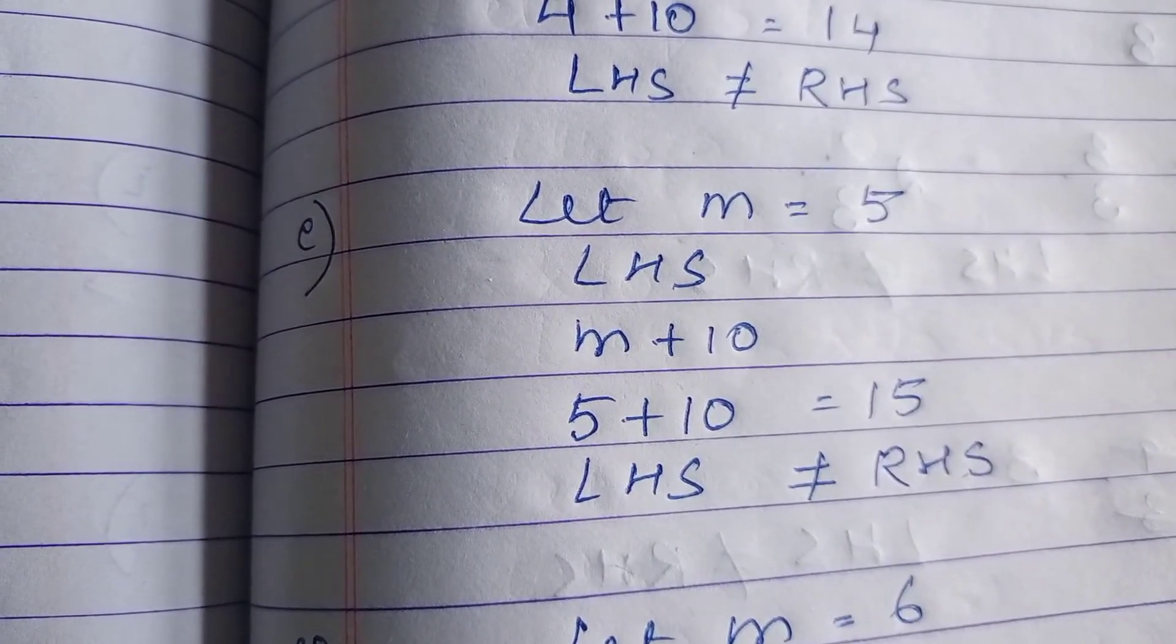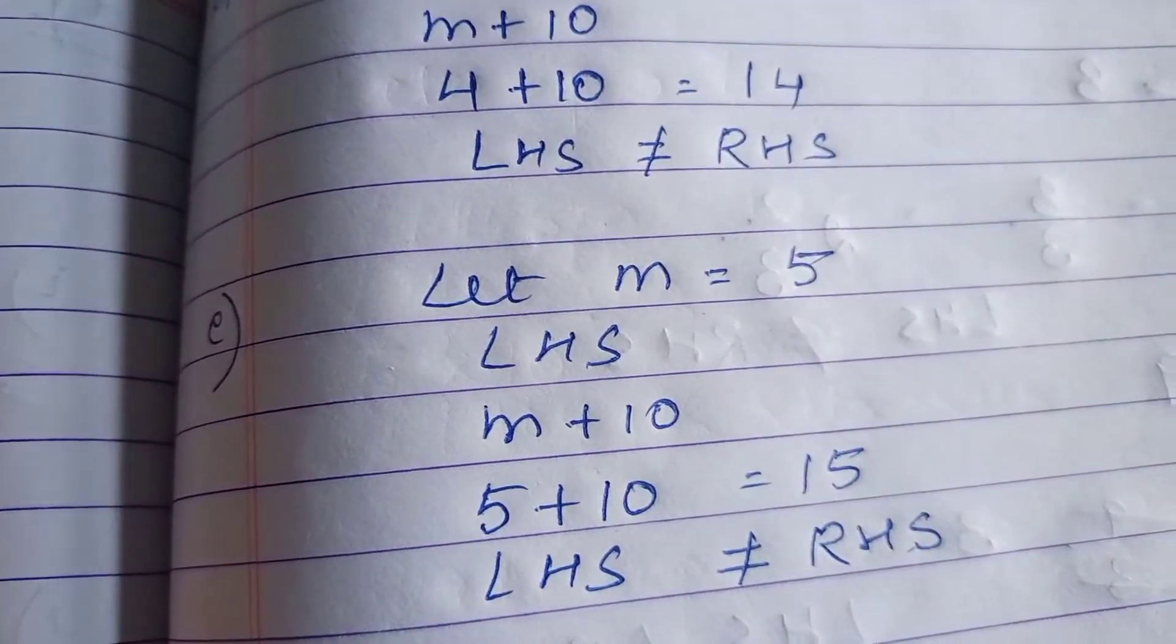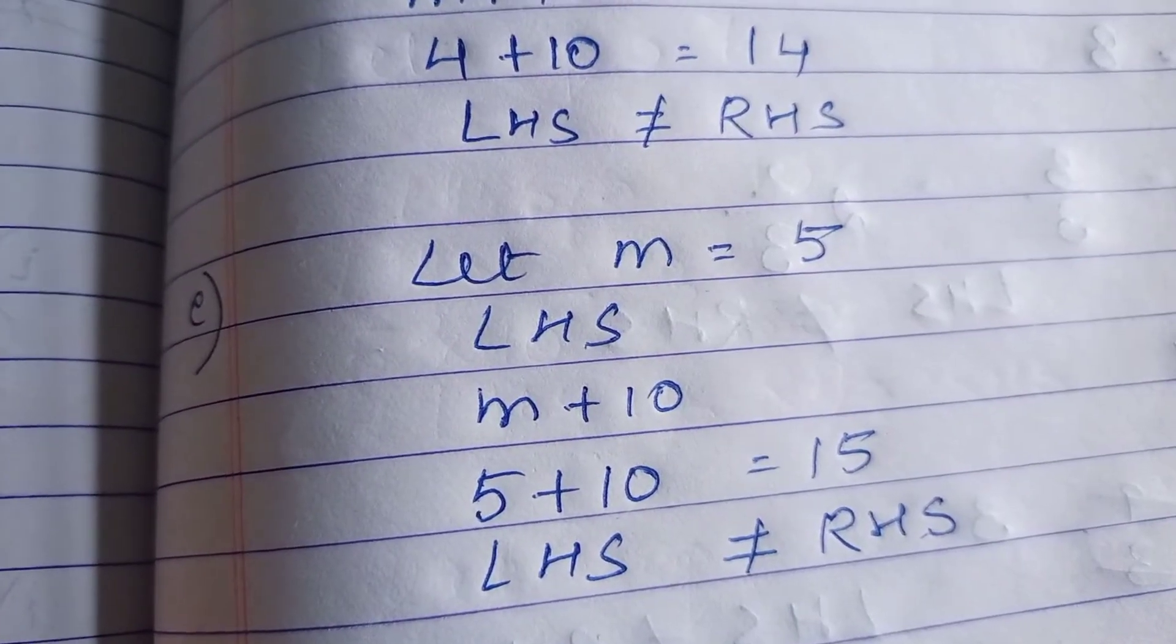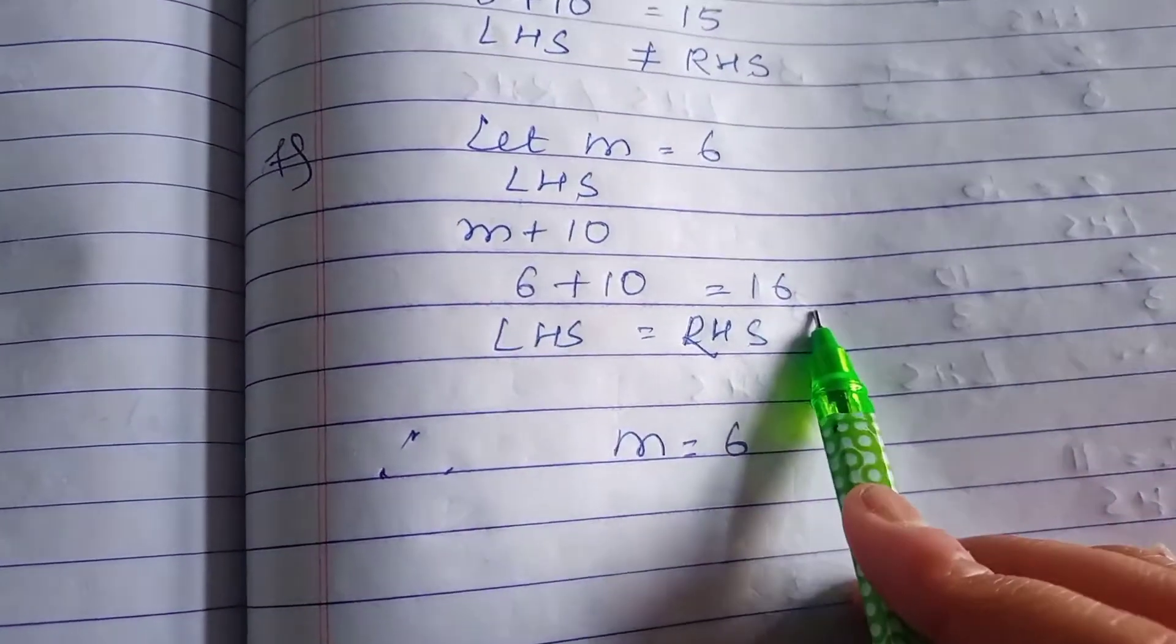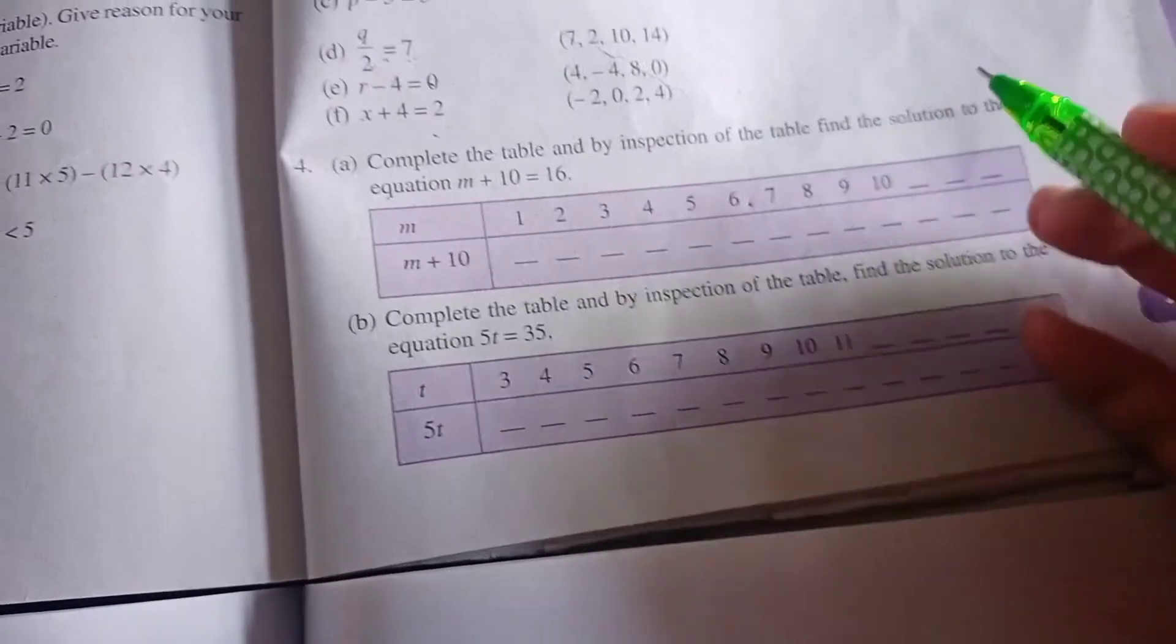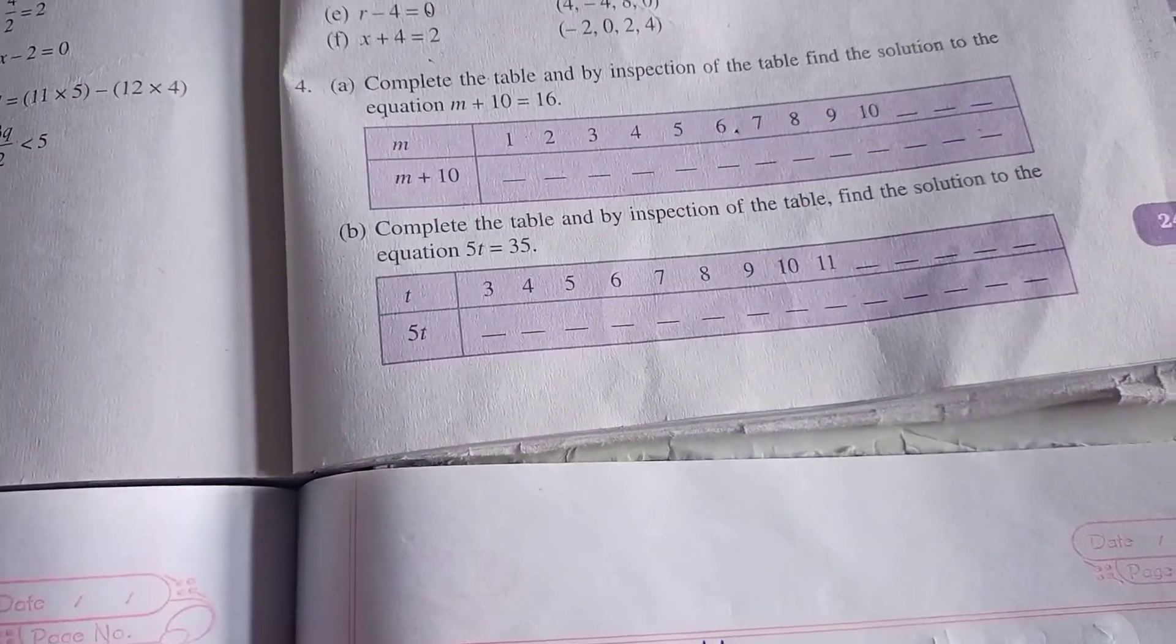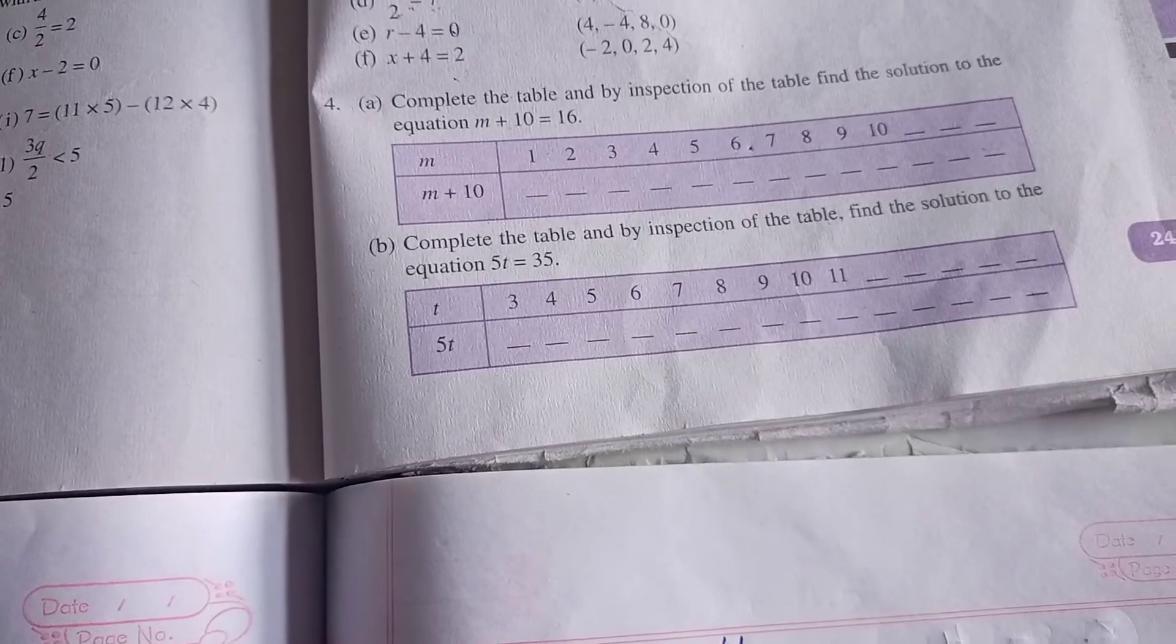Let m equals 5. 5 plus 10 is 15, not equal. Now for the last time, we keep m equals 6. 6 plus 10 is 16. Yes, we have got m equals 6. We will stop here because we have found our solution.